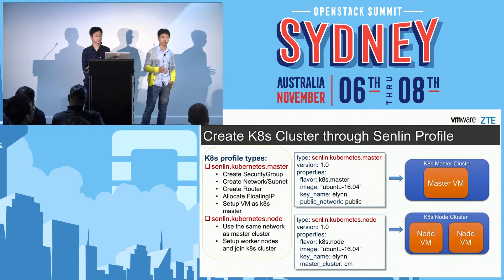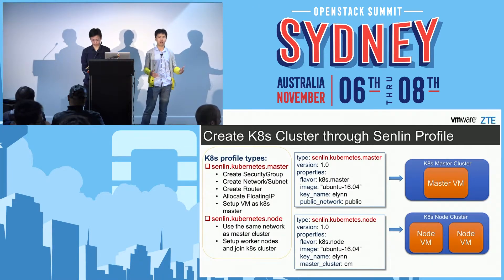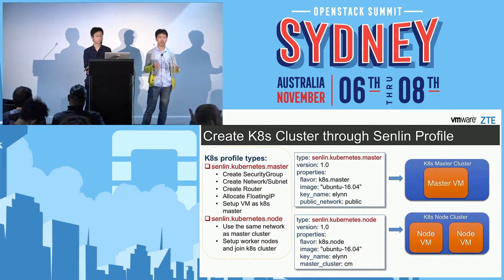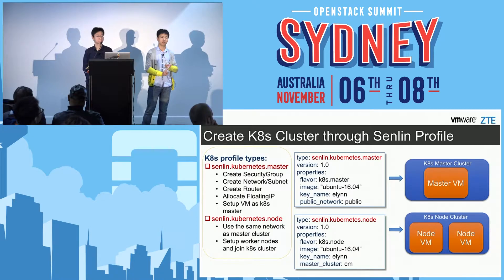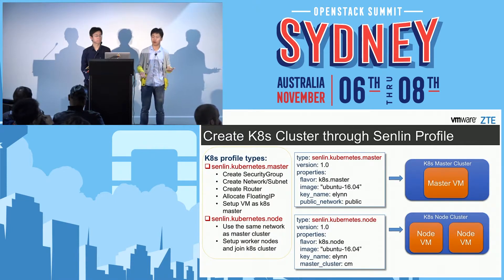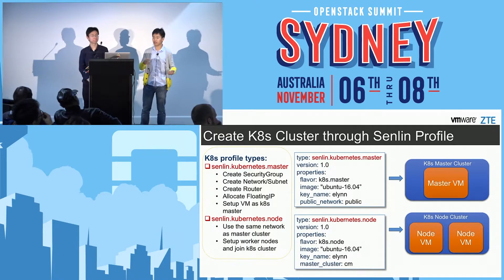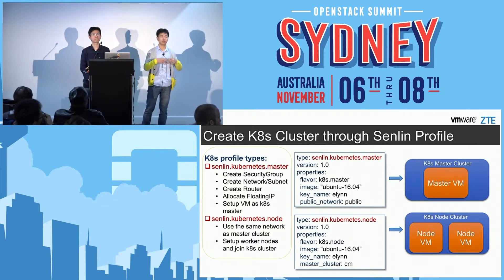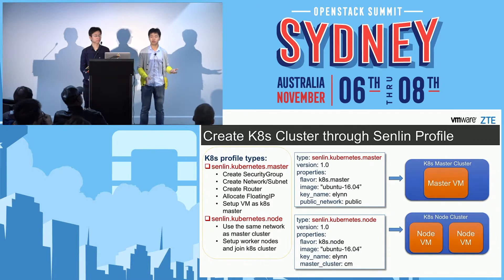Senlin will create the private network, create the router, and allocate a floating IP to the master node. Senlin will also run a user script in the virtual machine, and this script will bootstrap the Kubernetes master cluster. It will store some necessary information into the cluster data, like the private network ID, the IP of the master node, and also the token of the Kubernetes cluster. Then I use the Kubernetes node profile to create a node cluster, providing the master cluster name or ID, so it will use the same private network and the same Kubernetes token to join the cluster automatically.